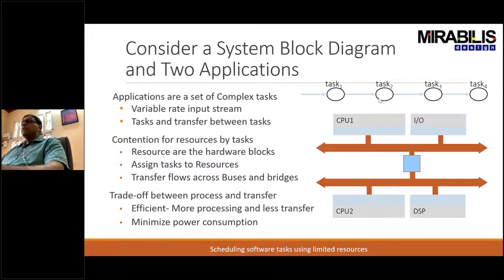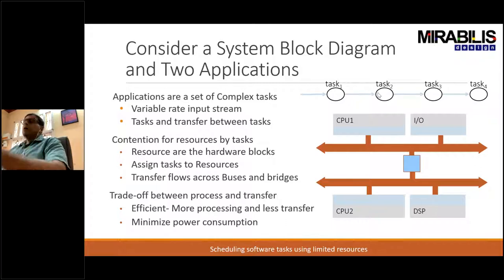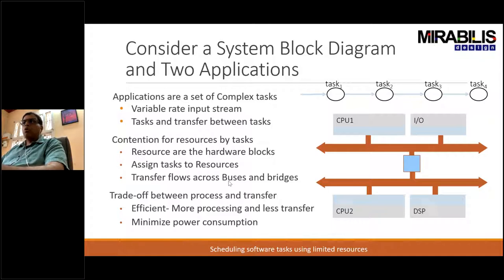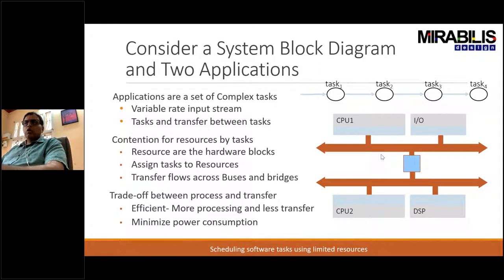In this case, we have an application consisting of four tasks with a variable input stream — a variable rate of data coming in that triggers each one of these tasks. The activity between them is called the transfer between tasks. The reason the transfer is critical is because a lot of the overhead is not from processing on the RISC-V or processing core, but rather from the buses, networks, bridges, memories, and other resources that go along with processing.